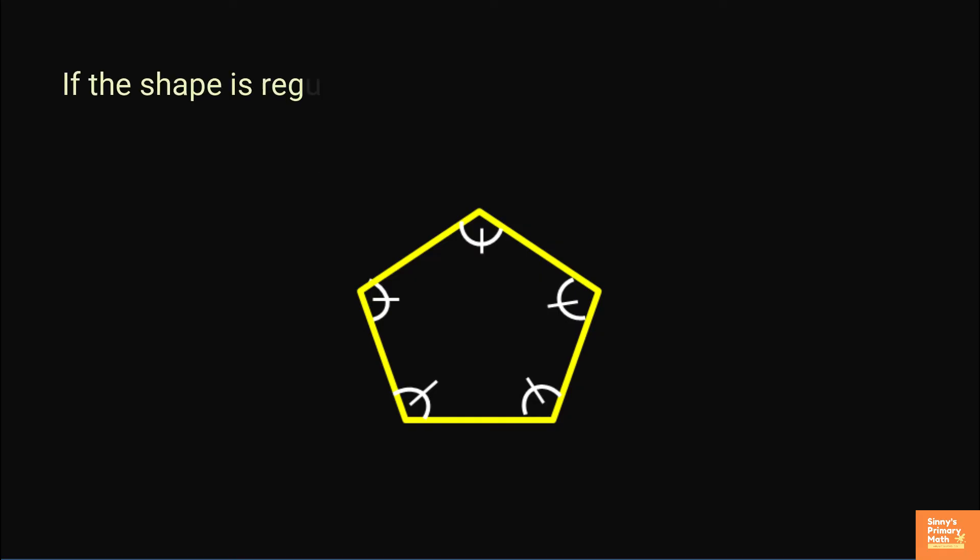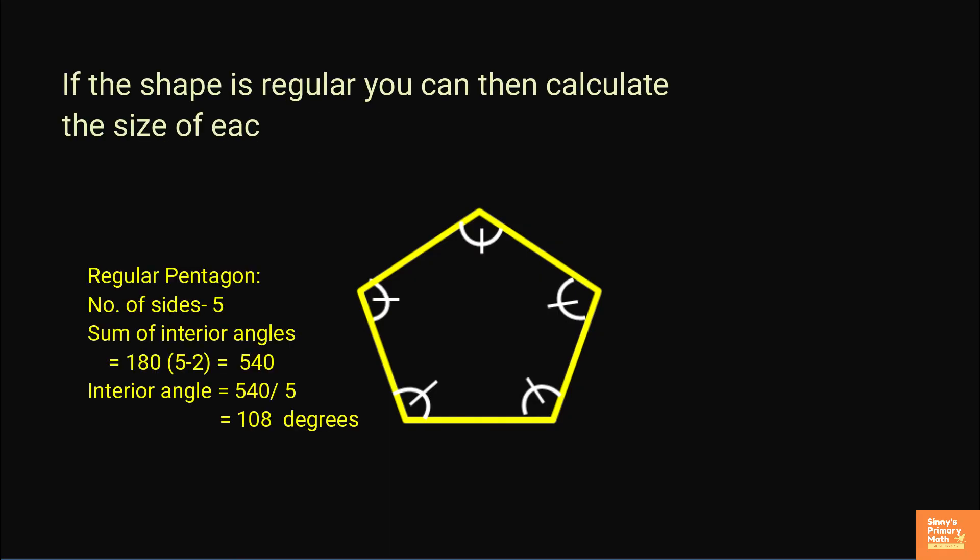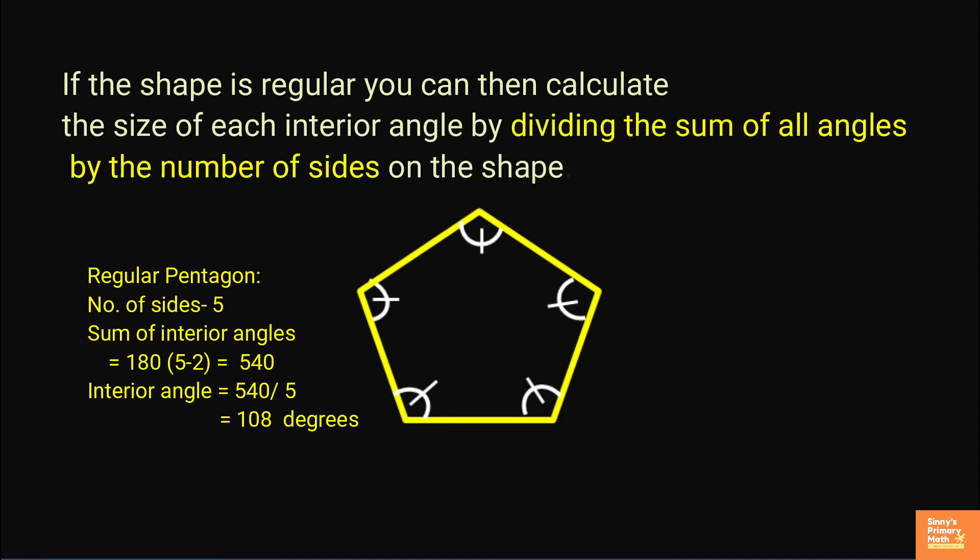If the shape is regular, you can then calculate the size of each interior angle by dividing the sum of all angles by the number of sides on the shape.